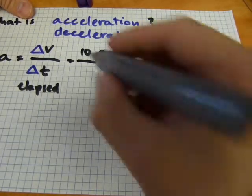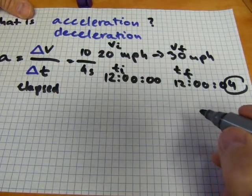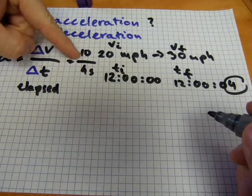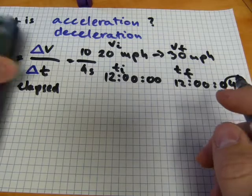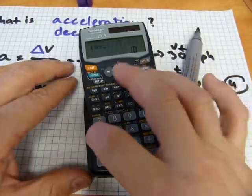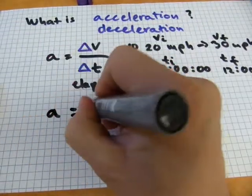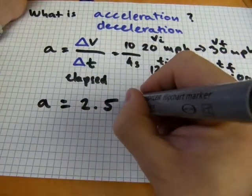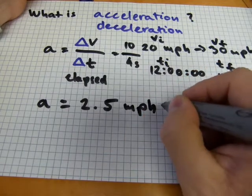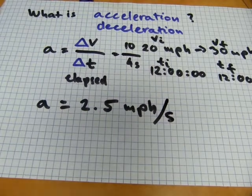So you accelerated - you went faster by 10 miles per hour in four seconds. Then you just do the numbers, divided by four: 2.5. So your acceleration is 2.5. You went 2.5 miles per hour faster for every second. Now that's not a standard unit of measurement for acceleration, I realize that, but I do this on purpose.